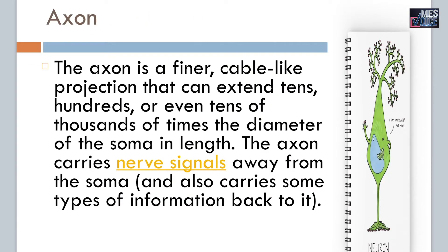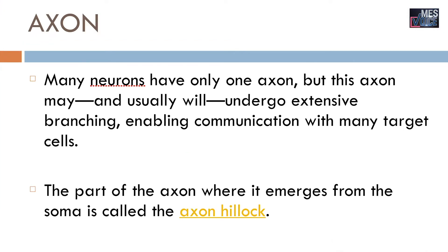The axon is a fine cable-like projection that can extend tens of hundreds or even tens of thousands of times the diameter of the soma in length. The axon carries nerve signals away from the soma. Many neurons have only one axon, but this axon may undergo extensive branching, enabling communication with many target cells. The part of the axon where it emerges from the soma is called the axon hillock.